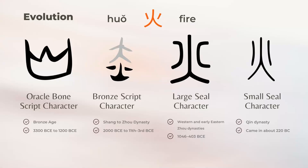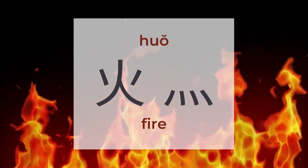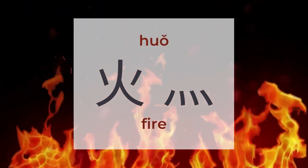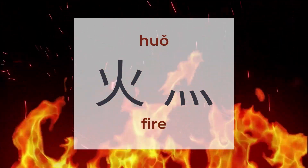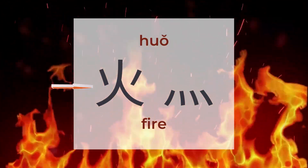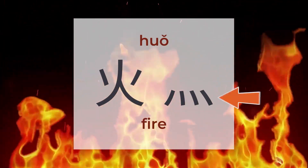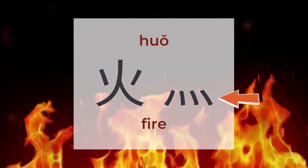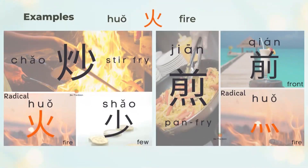火 means fire. There are around 639 characters to be found under 火. 火 is a pictogram with two forms. The form 火 transforms into four dots when appearing on the bottom of a Chinese character. When 火 is on the left, it changes to a skinnier form.